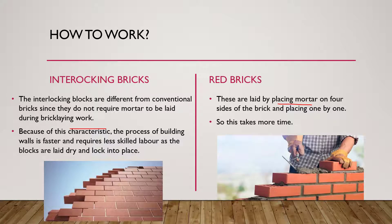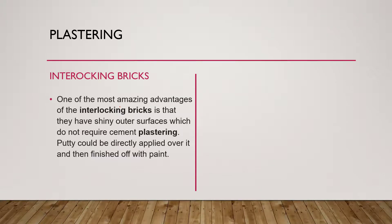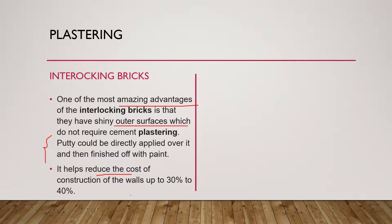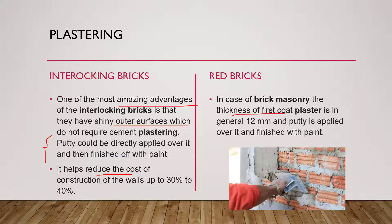One of the major advantages of interlocking bricks is their smooth outer surface — they do not require cement plastering. You can directly apply putty and paint, reducing wall construction costs by 30–40%. For conventional brick masonry, a first coat of plaster is generally 12 mm thick, followed by putty and paint, which costs more.